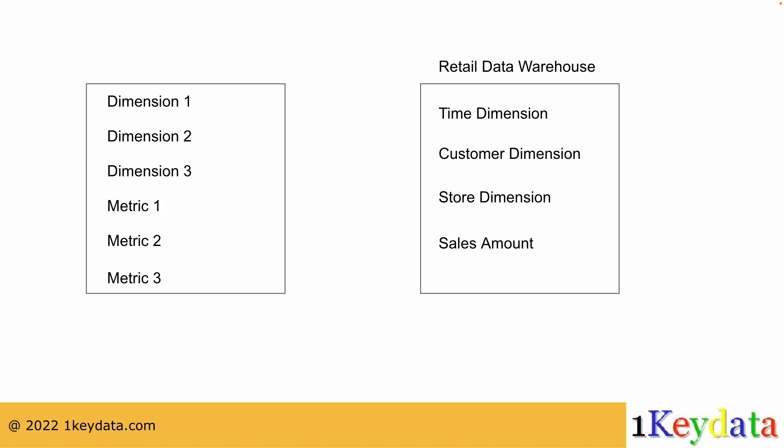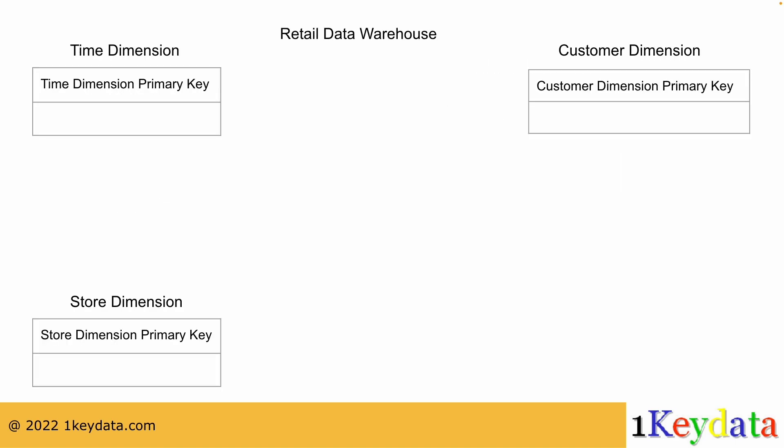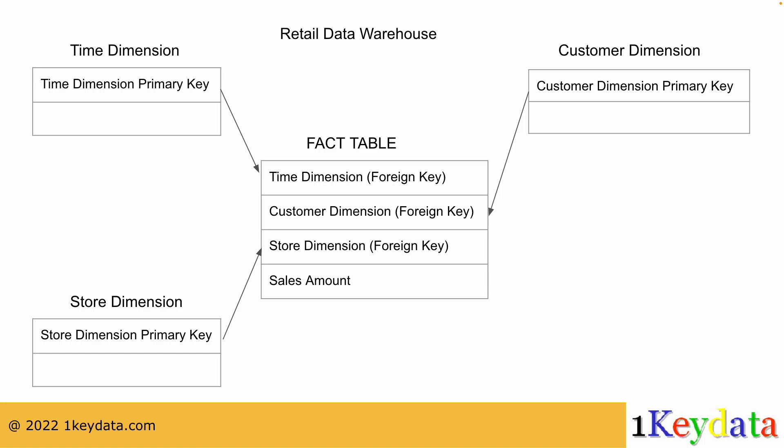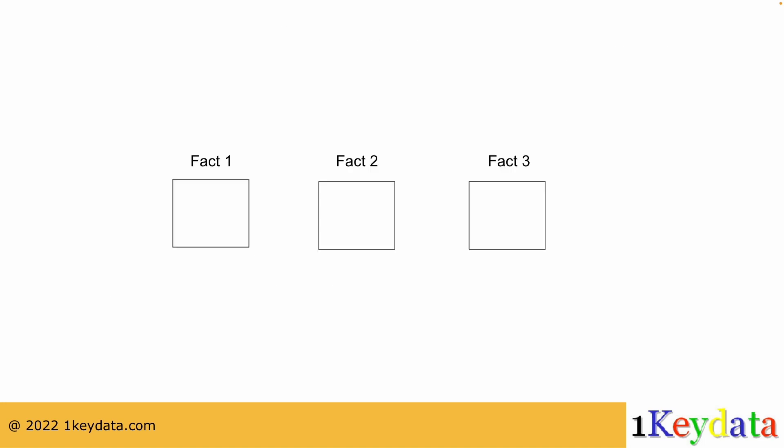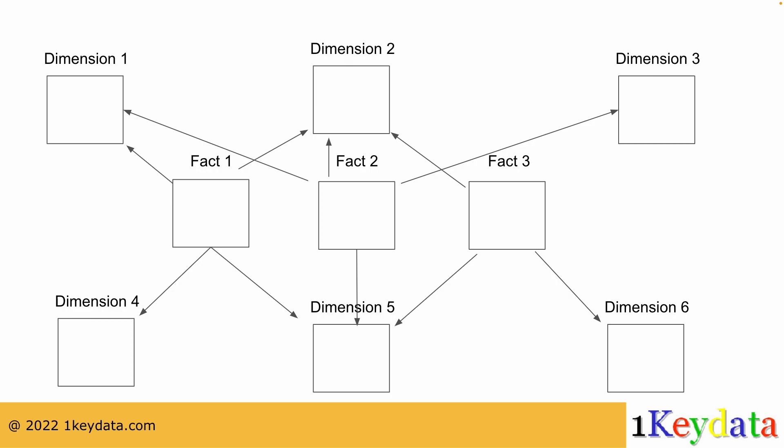So you can think of this as the primary key in the dimension table becoming the foreign key in the fact table. Also note that in a data warehouse, there may be more than one fact table. Different fact tables will be connected to a different set of dimensions.